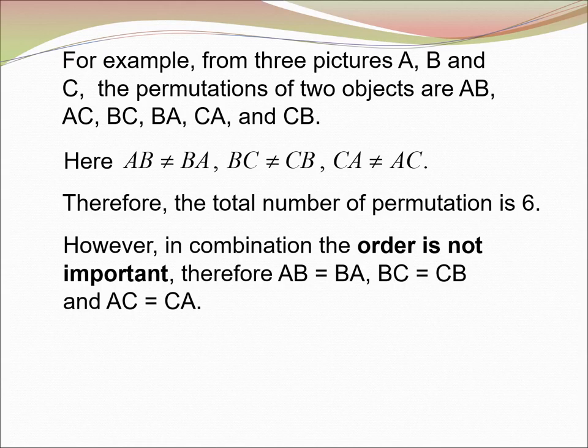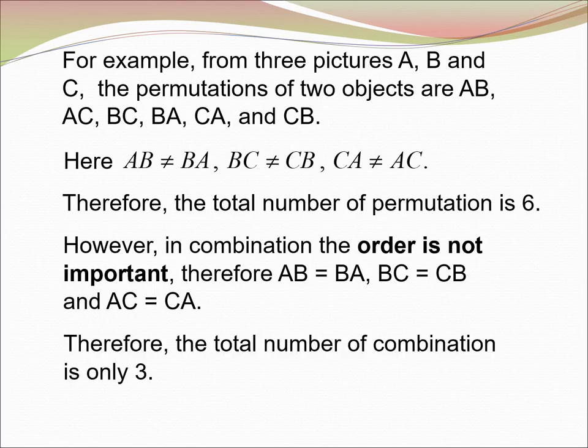However, in combination, the order is not important. Therefore, AB = BA, BC = CB, and AC = CA. Therefore, the total number of combination is only 3.